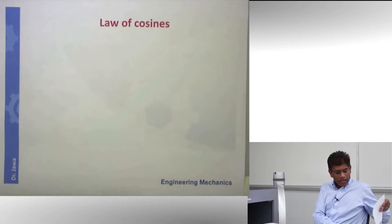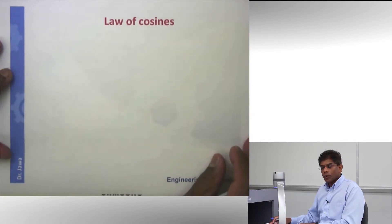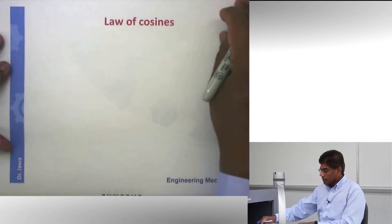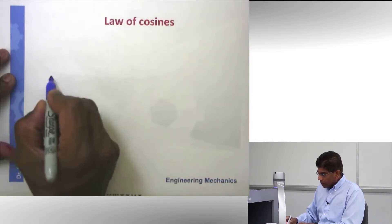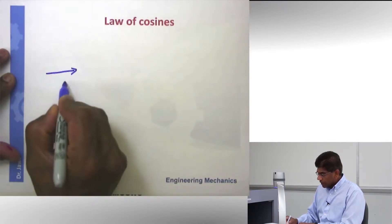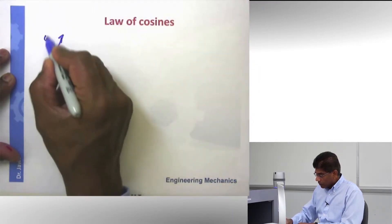So what I want to talk about now is how can you find the resultant of two vectors using a formula. Again, let's take a look at the same example. Here is my vector p. Here is my vector q.